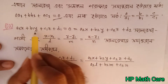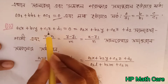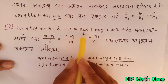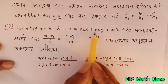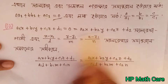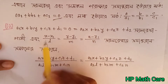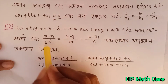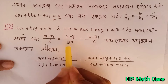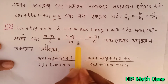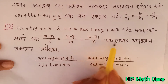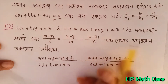So we have A1X plus B1Y plus C1Z plus D1 equal 0, equal to A2X plus B2Y plus C2Z plus D2. The line is expressed as: x minus x1 by L equals y minus y1 by M equals z minus z1 by N.